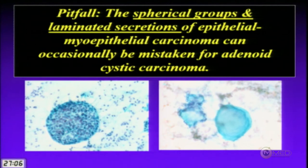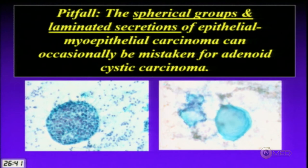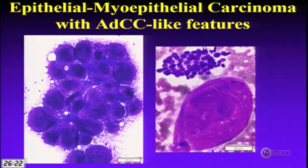A pitfall with FNA of epitheliomyoepithelial carcinoma is that features can raise concern for adenoid cystic carcinoma, which requires radical resection and often nerve sacrifice. Features of concern include large spheres of cells. Regarding secretions, the laminated proteinaceous secretion here differs from the homogeneous matrix produced by adenoid cystic carcinoma.